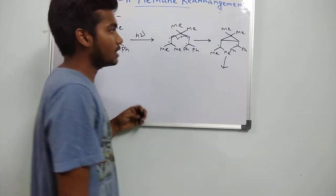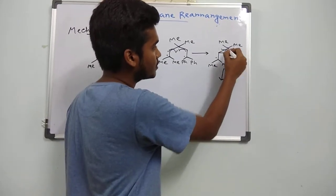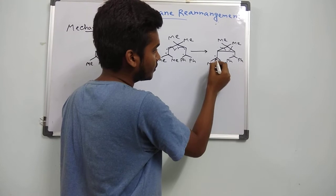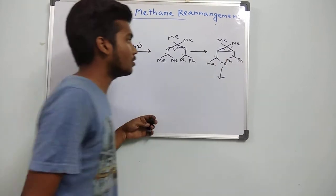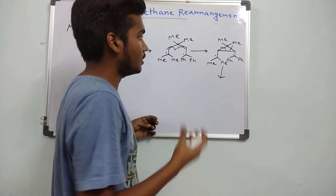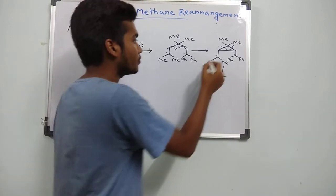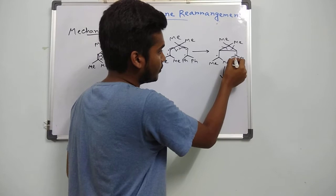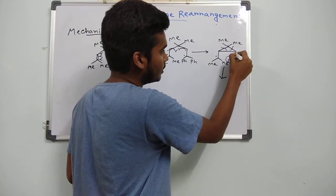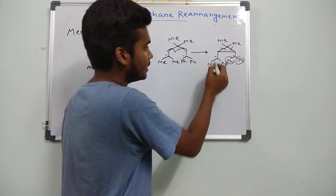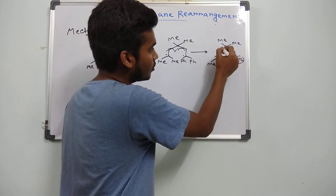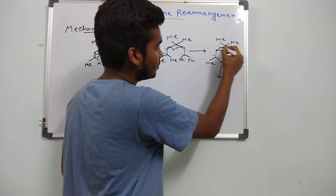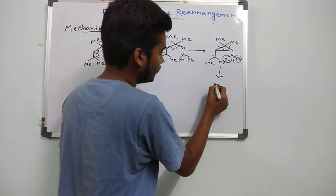And in the further step, what will happen — this bond or this bond can be cleaved. Here you can see that, as a radical is electron deficient, between these two radicals, the phenyl group which is attached to this radical makes it more stable than the other radical. So this bond will cleave first, to stabilize this radical.